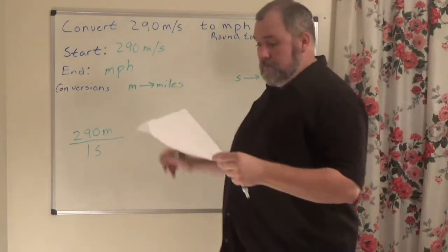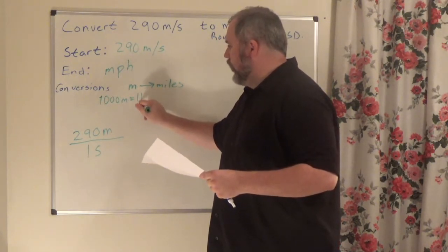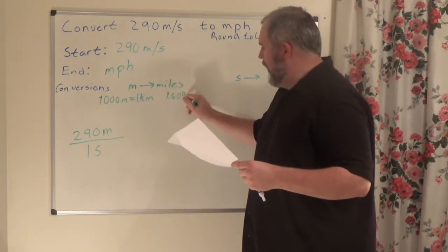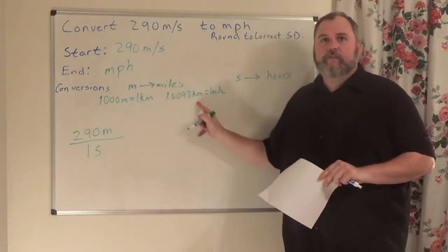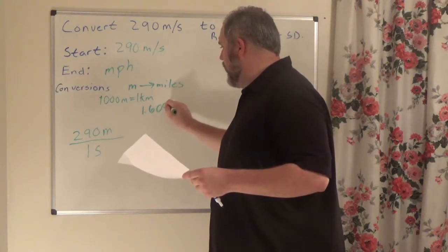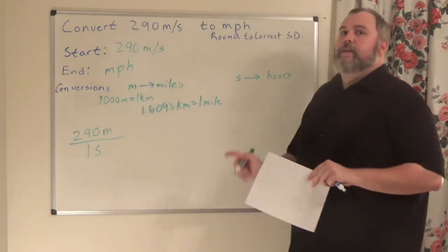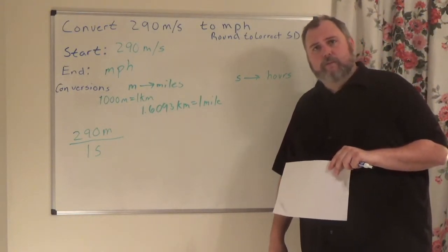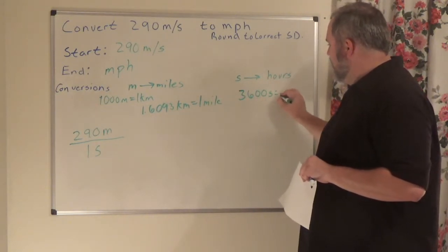Conversion factors from meters to miles: I know that 1,000 meters equals one kilometer, and 1.6093 kilometers equals one mile. For seconds to hours, 3,600 seconds equals one hour.